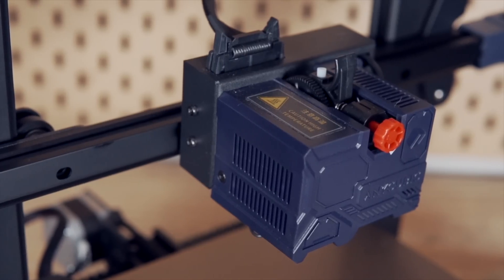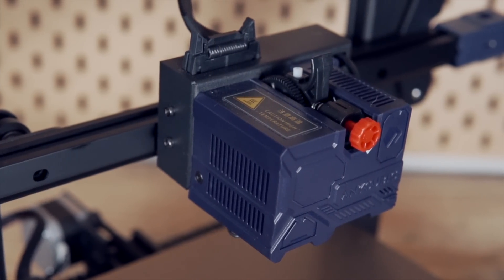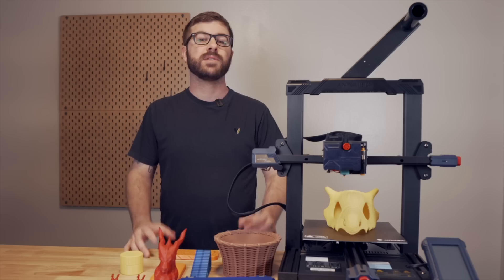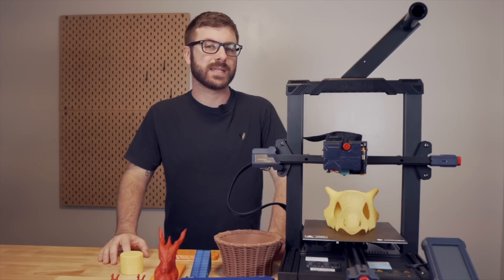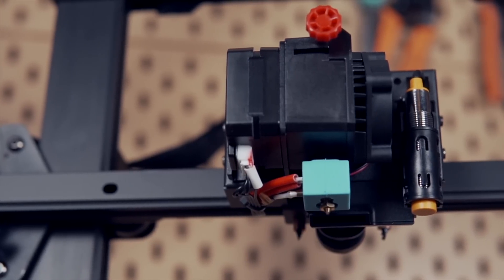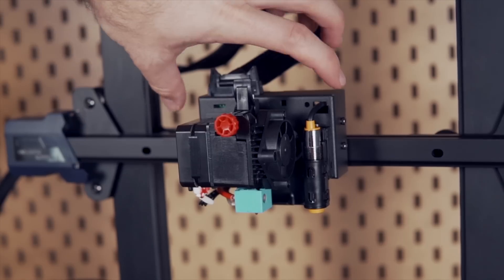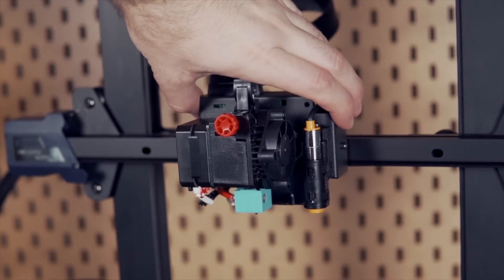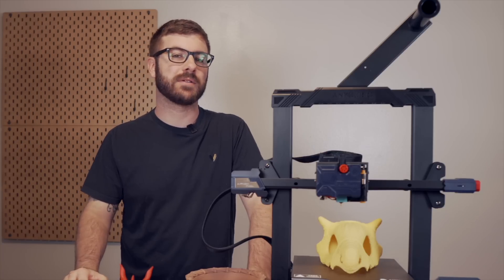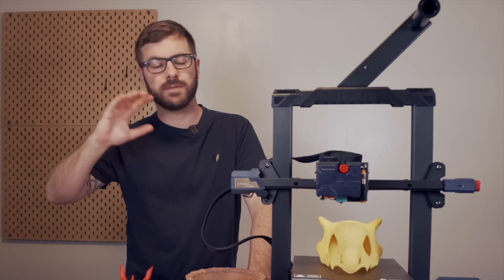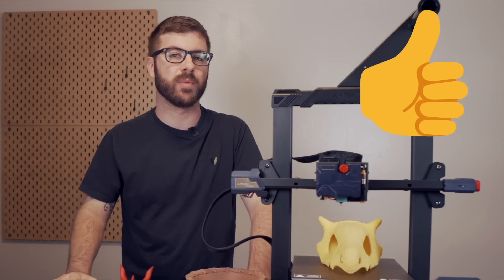The extrusion system is direct drive and the closest thing it reminds me of is a Titan style extruder. The hot end is not all metal and reminds me of an E3D V6 heater block. I did also swap out the nozzle during my testing and can confirm that it uses a standard V6 thread so you can use any V6 compatible nozzles on the Cobra.